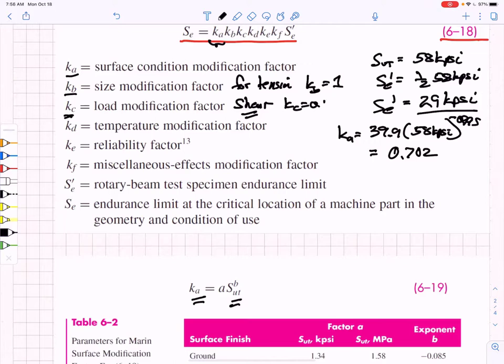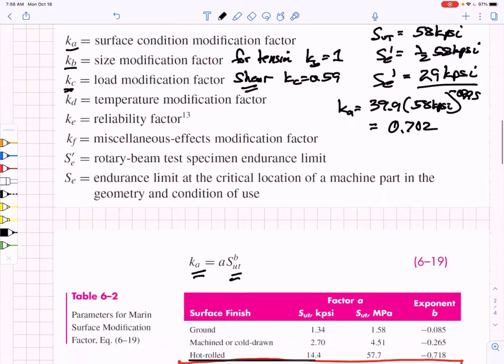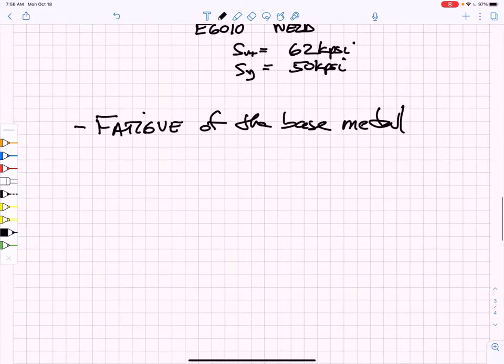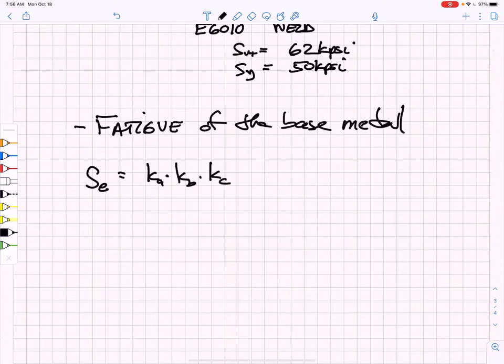At this point in time, I'm not going to worry about any of the other modification factors. So I'm just going to let all the rest of them be equal to 1. This means that our endurance strength estimate is going to be KA times KB times KC times our 29 kpsi initial endurance strength estimate.